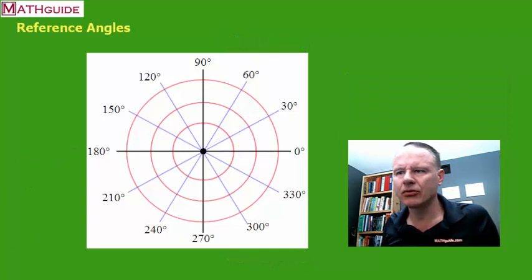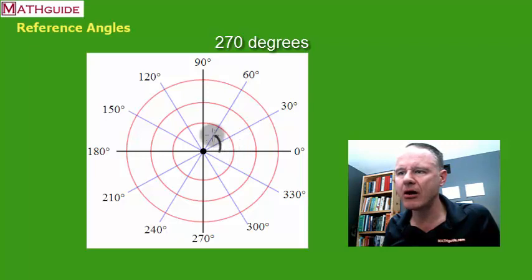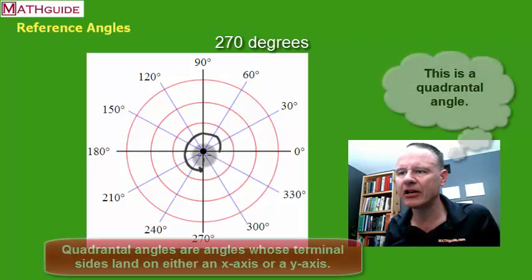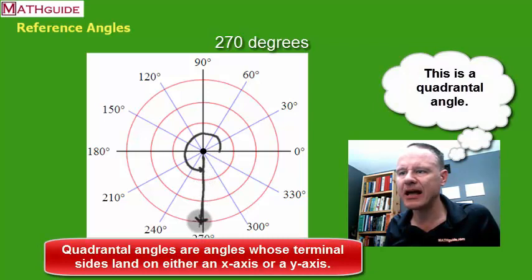All right, so let's try another angle like 270 degrees. So let's say we wanted to graph it. So your initial side will be at zero. You're going to rotate around until you get to 270. There you go, we're at 270 and now you're pointing straight down to 270 degrees. So now what's the reference angle?